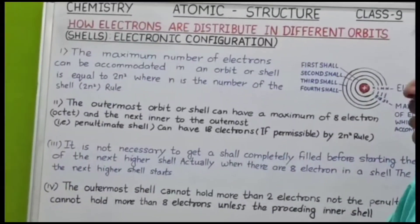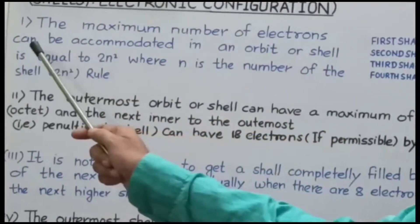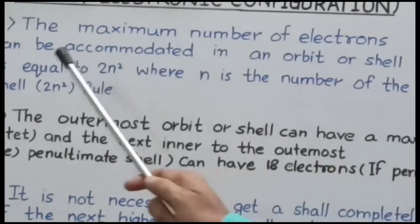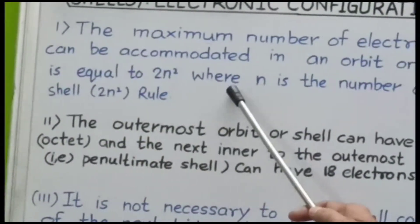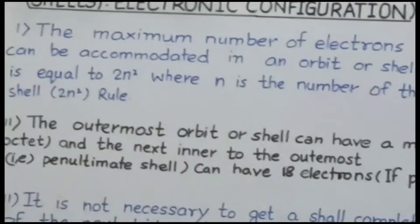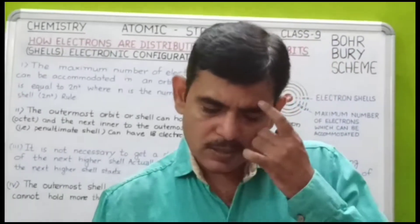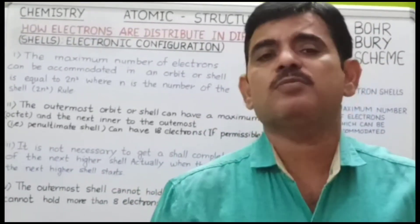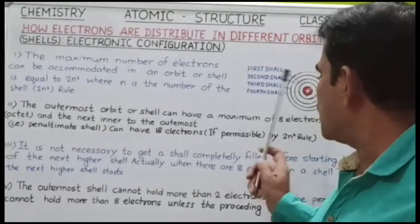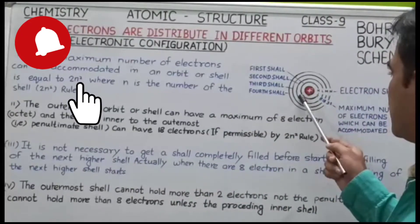सबसे पहले Bohr का पहला नियम: the maximum number of electrons that can be accommodated in an orbit or shell is equal to 2n², where n is the number of the shell. 2n² के हिसाब से जो भी shells होंगे उनमें electrons की संख्या निकलती है। यहाँ n means number of shell है — यानि 1st shell, 2nd shell, 3rd shell, 4th shell।